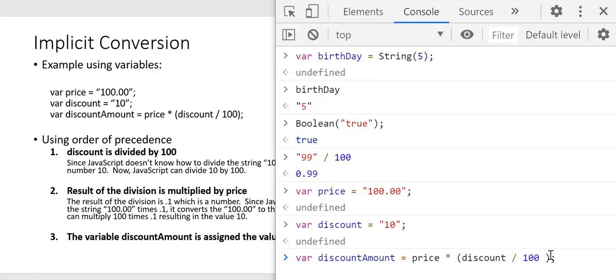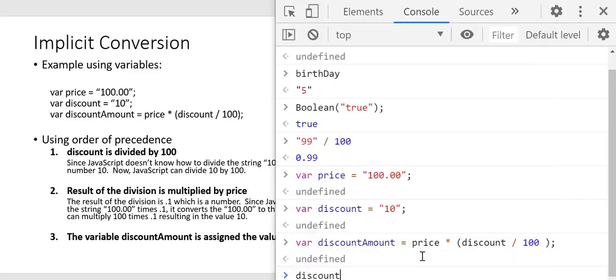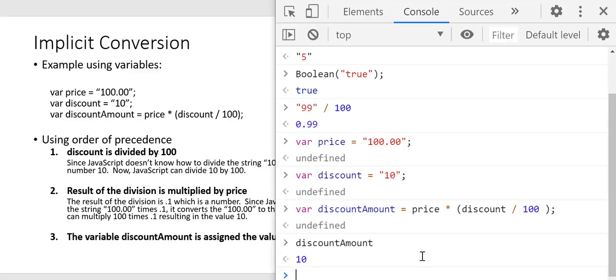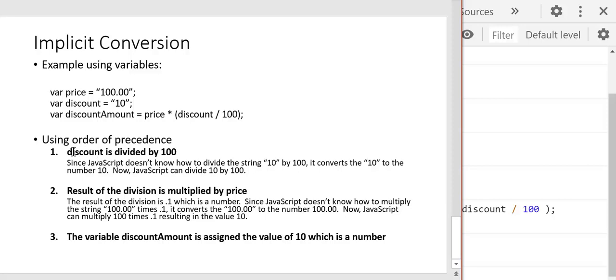Now 0.1 is a number, but we're multiplying it by price, which is still a string. Since JavaScript can't multiply strings, it checks whether price can be converted to a number. Since price contains only digits and a decimal point, it implicitly converts it, then multiplies 100 by 0.1 to get 10. That answer of 10 is stored in the discount_amount variable. So there are three steps: implicit conversion for division, implicit conversion for multiplication, then assignment of the result.